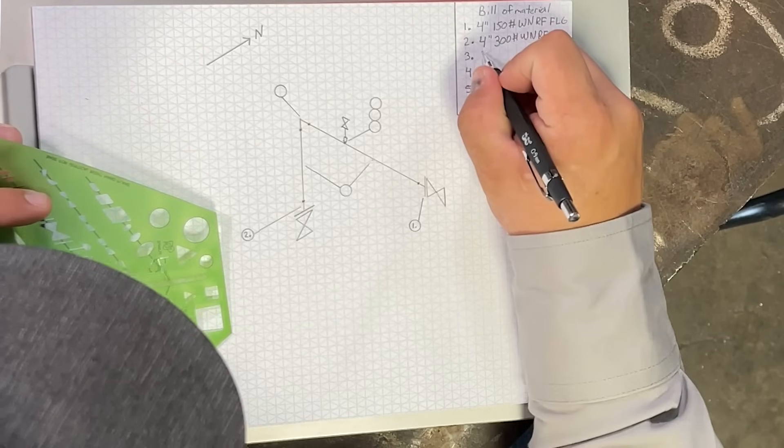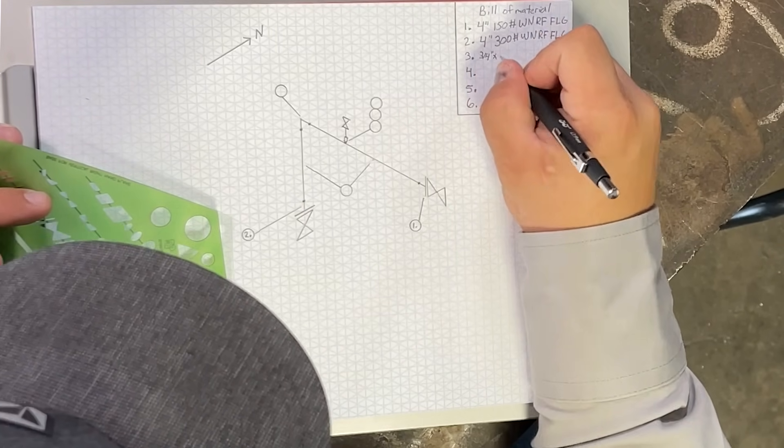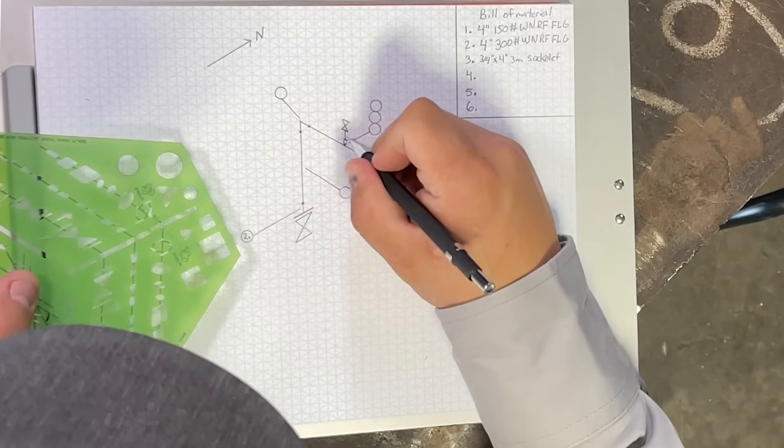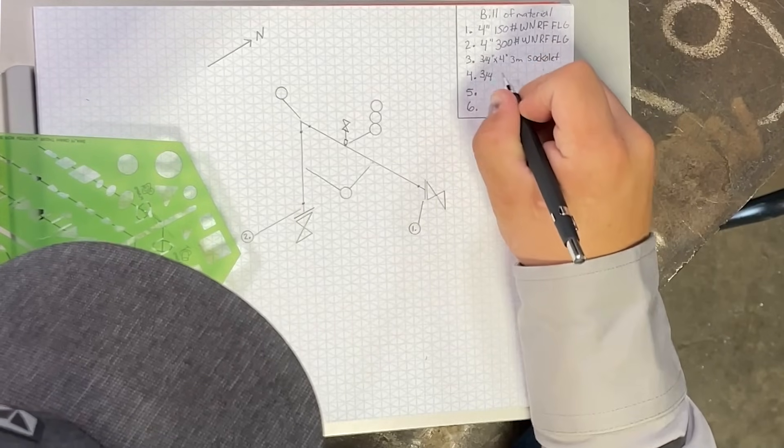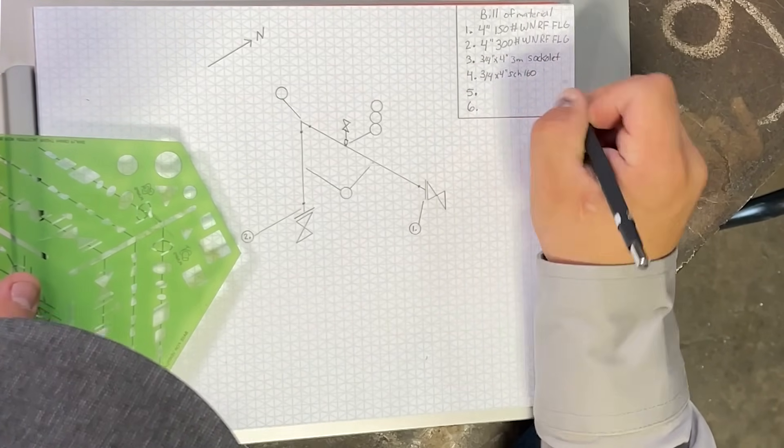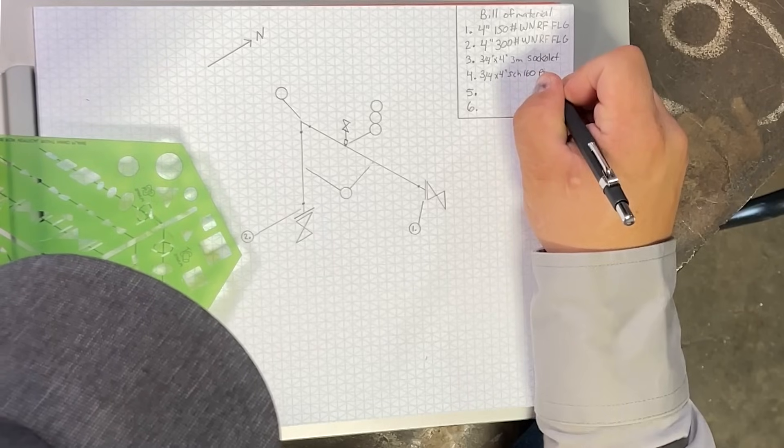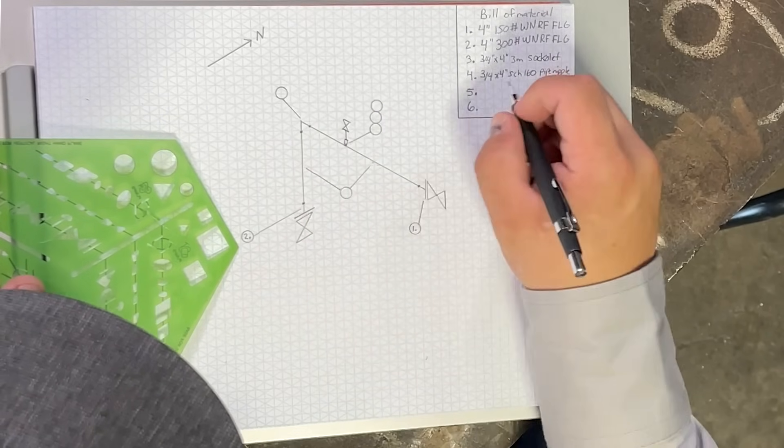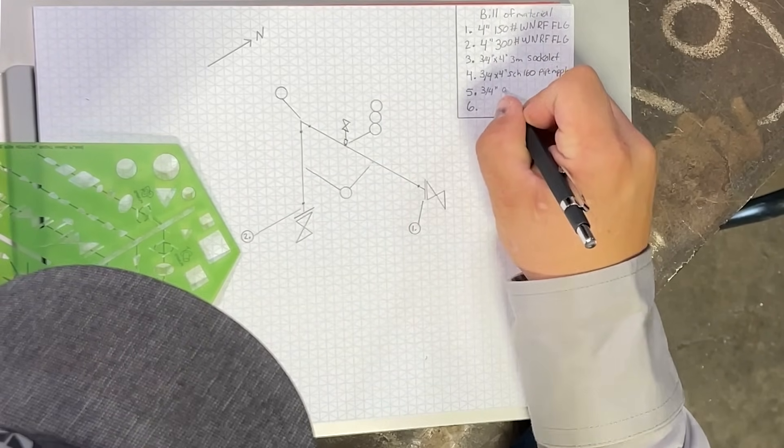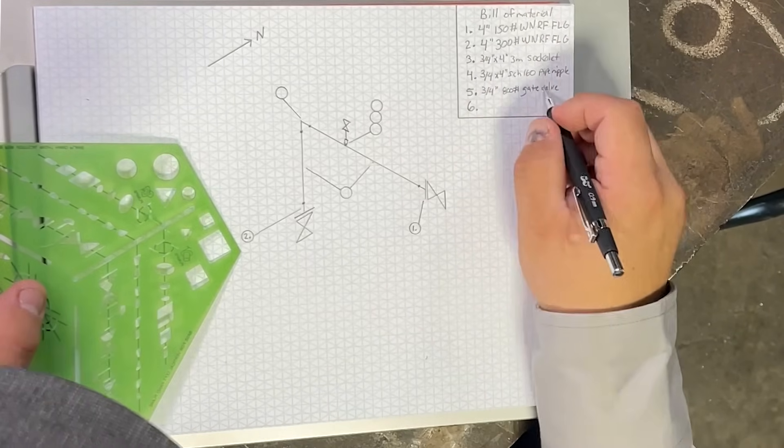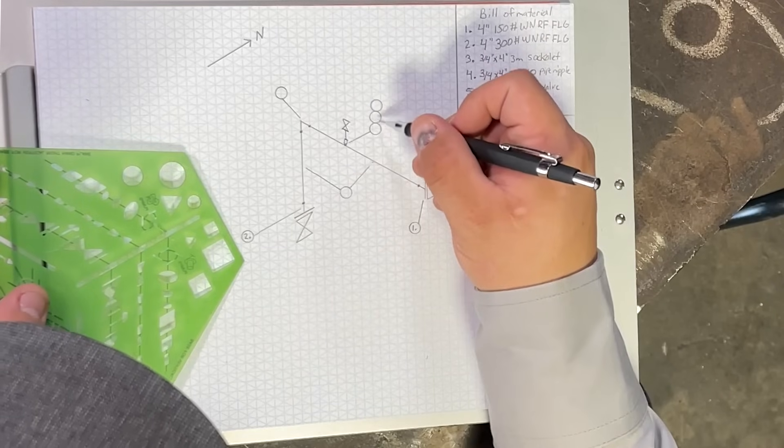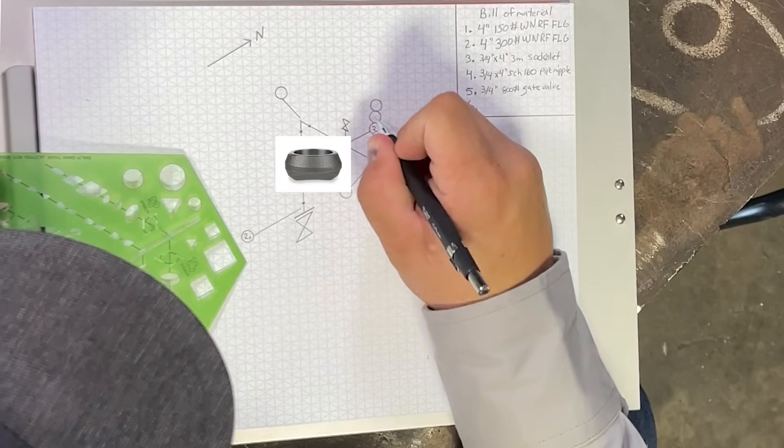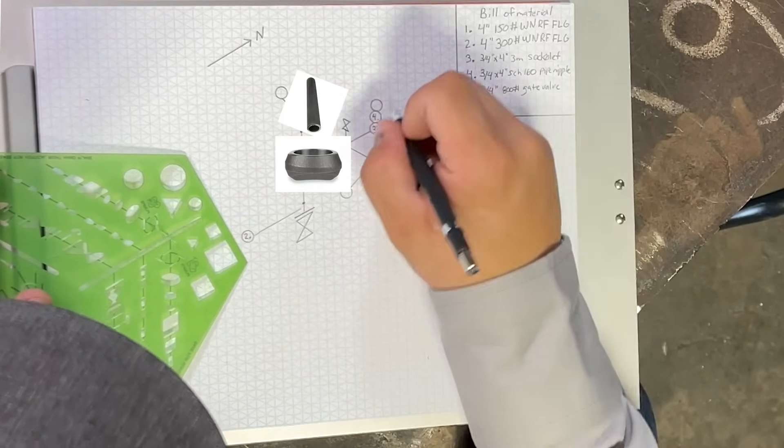And then here we had said it's going to be a three quarter bleeder. So this will be a three quarter inch on four inch, 3,000 pound sucklet. The next component in this is going to be our pipe nipple here. So we are going to put it as a three quarter inch by four inch long schedule 160 pipe nipple. And then we are going to specify our valve now. I'm going to say that that is a three quarter inch, 800 pound gate valve. So I'm going to go ahead and label these as the way they're drawn here. So we're going to go three, four, and five.